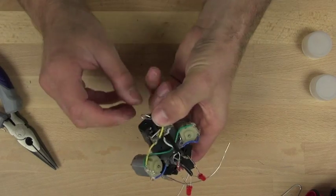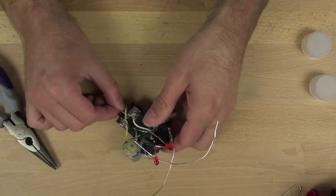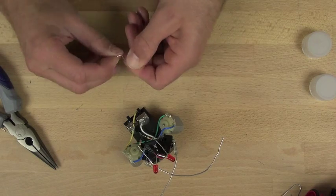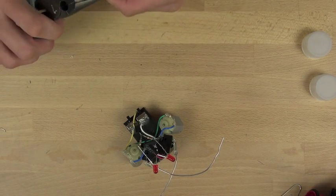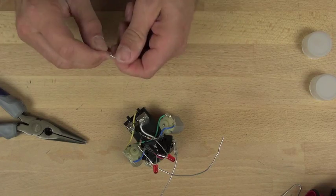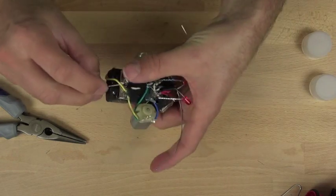So again, once you've got it bent and it fits pretty well between the two switches, you can obviously adjust it and bend it to where it's just the right height and lines up perfectly.